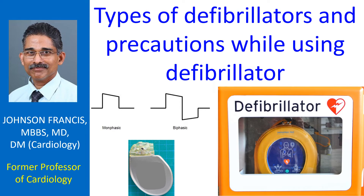A defibrillator is a device used to deliver high voltage direct current shock to the chest through a pair of electrode patches or paddles, to restart the heart which has suffered a cardiac arrest. Usually the voltage is about 2000 volts. A high voltage capacitor is used in the device to store the energy at high voltage just before delivery.